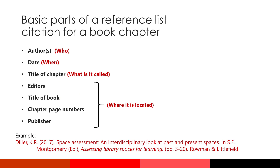For a book chapter, your entry will look very similar to the entry for the book as a whole, but you will need to include information about the author of the chapter and the editors of the book. The author of the chapter, the publication date, and the title of the chapter supply the information for your who, when, and what categories. But your where category will need to include the editors of the book and the title of the book, along with the page numbers for the actual chapter cited. You will also include the publisher name you always include for books. Note that the editor information comes right before the title of the book as a whole, whereas the page numbers come right after it.